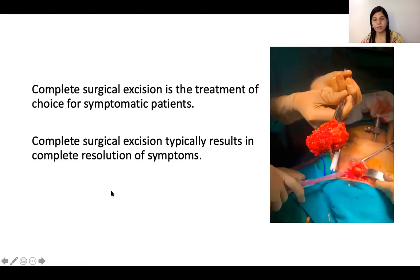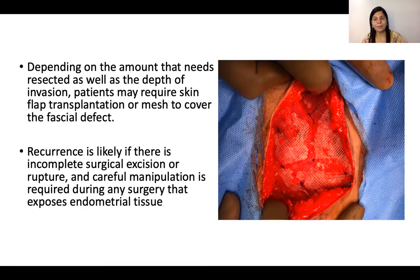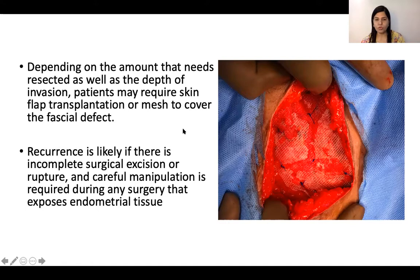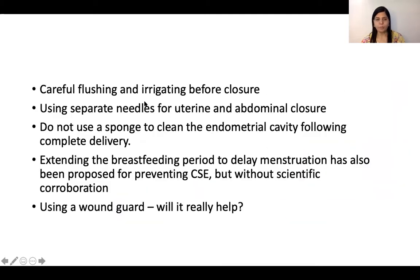Complete surgical excision is the treatment of choice for symptomatic patients and typically results in complete resolution of symptoms. Whether a patient needs mesh repair depends on the extent of sheath involvement and the gap between layers — if approximation is not adequate after excision, mesh repair may be required, to prevent hernias and avoid unnecessary strain on the suture line. In cases of incomplete surgical excision, recurrence can be as high as 28 percent. Careful manipulation is required during any surgery that exposes endometrial tissue, and wide excision with clear margins is necessary.